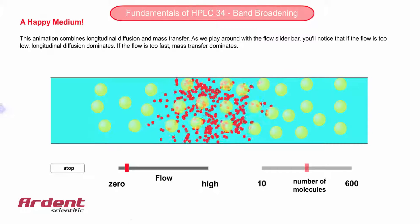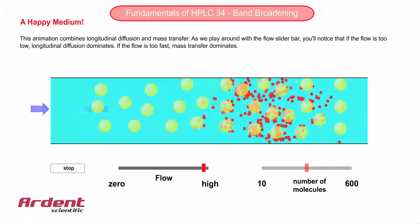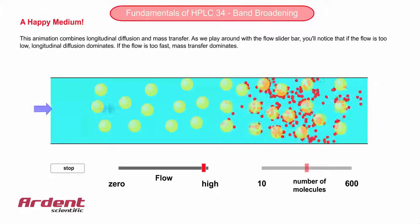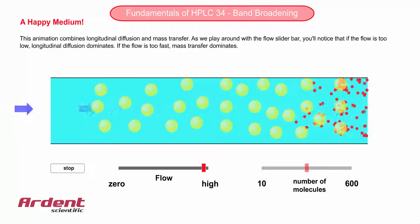There is an optimum value for the mobile phase velocity. For 4.6mm ID columns with a particle size of 5 micron, this mobile phase velocity equates to a flow rate of about 1 to 1.5 mils per minute.